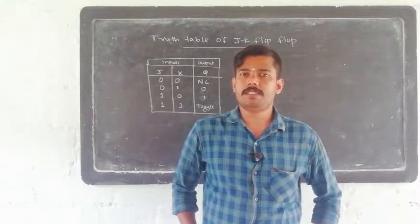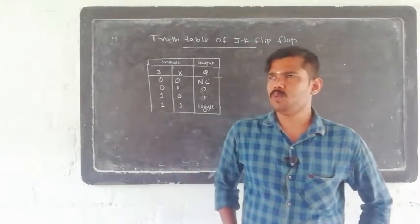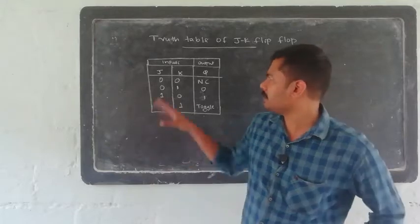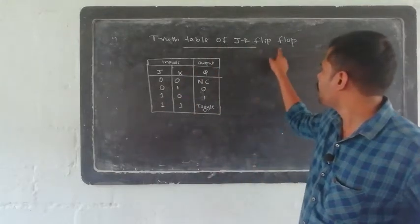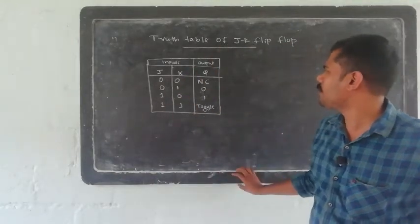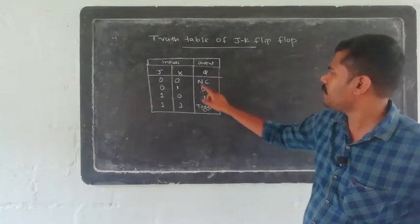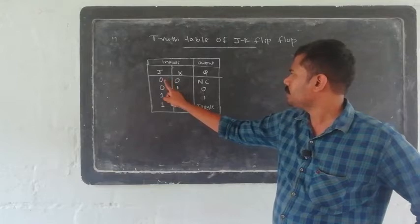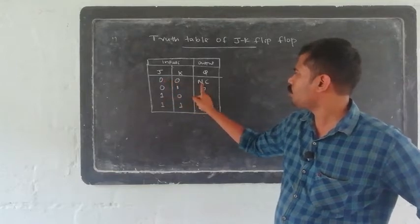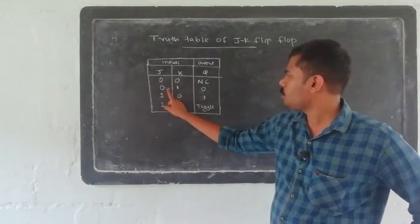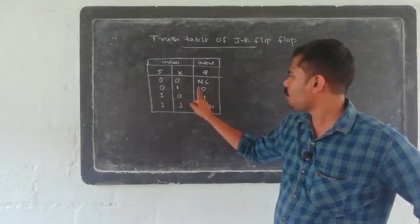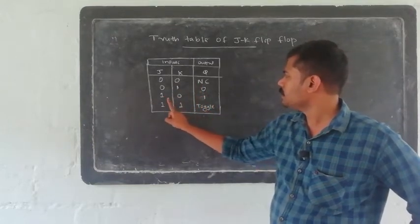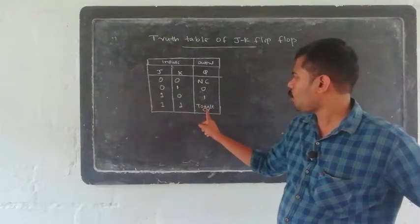We discussed the truth tables separately, but generally the truth table of the JK flip-flop has inputs J and K and output Q. When J=0, K=0, output is 0. When J=0, K=1, output is 0. When J=1, K=0, output is 1. When J=1, K=1, the output is toggle.